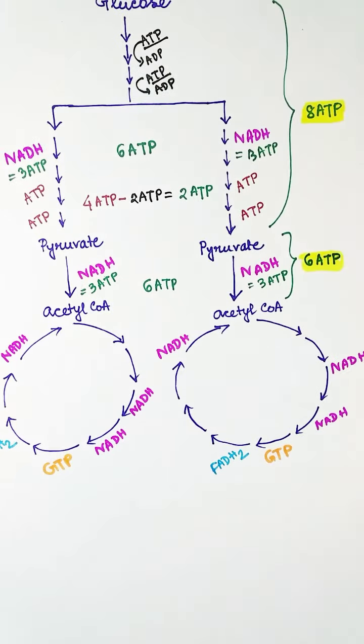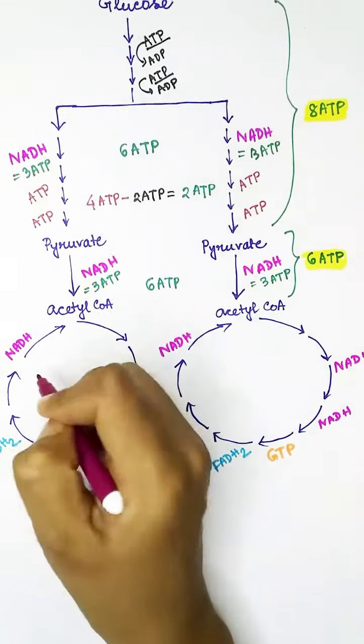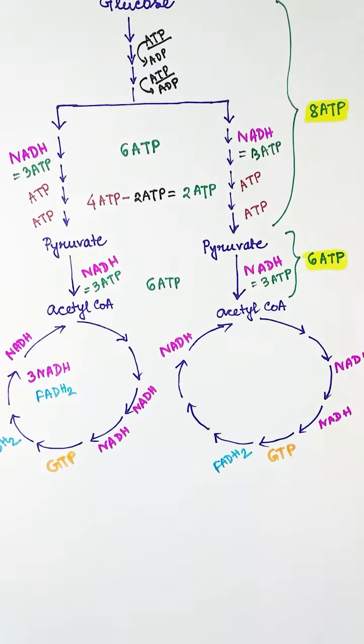In Krebs cycle we have three NADH, one FADH2, and one GTP. As one NADH is equivalent to three ATPs, so from three NADH we get nine ATPs.